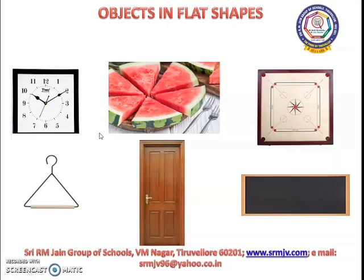Let's see the objects that are in flat shapes. Clock and carom board look like square shapes. A piece of watermelon and an anchor look like a triangle. Door and blackboard look like a rectangle.